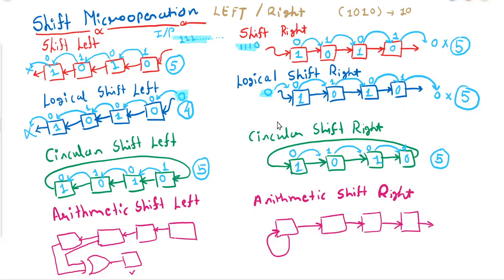In both normal shift and logical shift, the outgoing bit — either the last bit or the first bit — is discarded. In circular shift, we do not discard any bit; we simply bring the outgoing bit to the first position or last position accordingly.